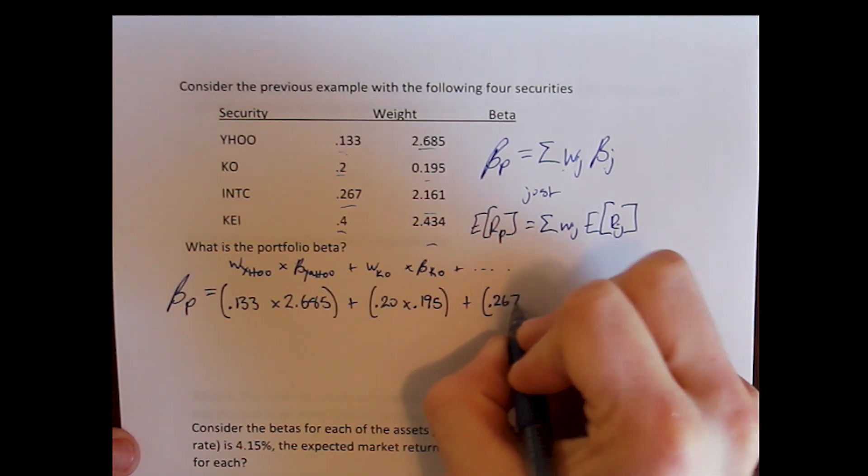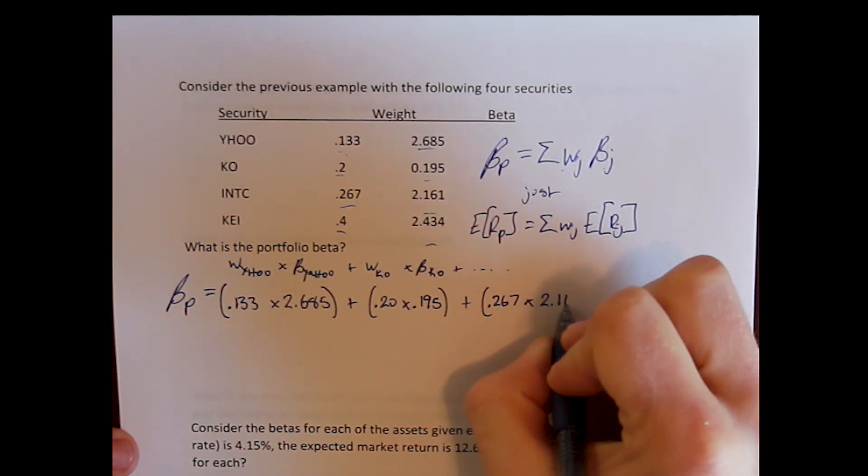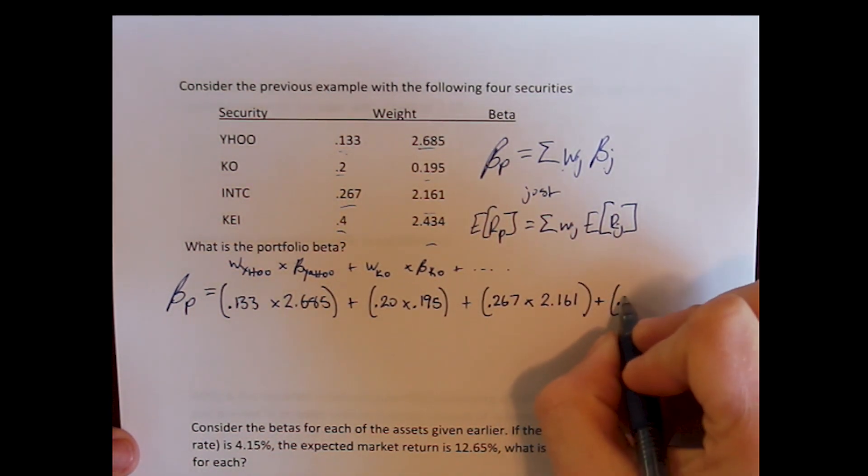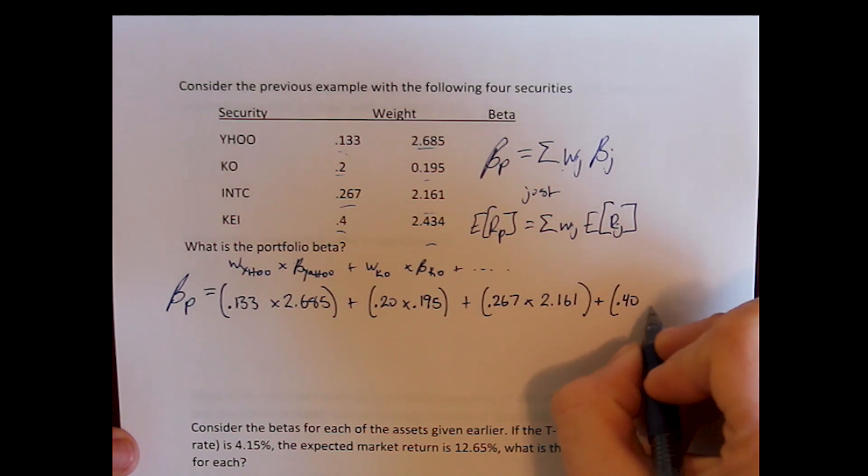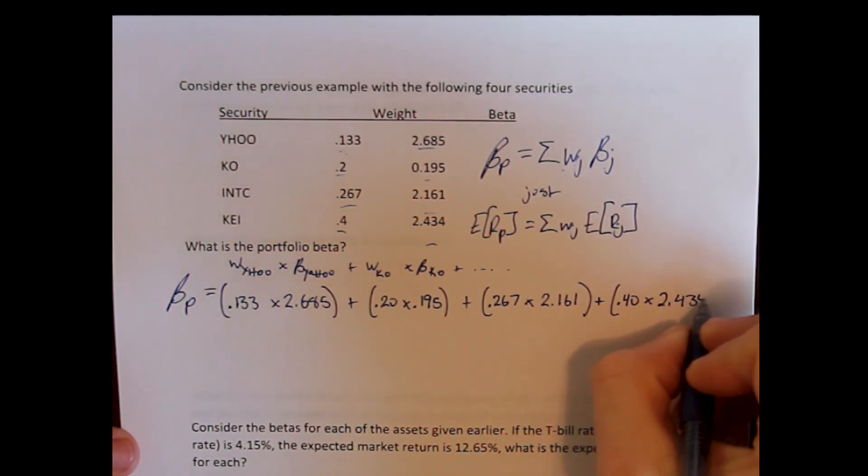26.7% of our portfolio is in Intel and the beta for Intel is 2.161 plus the remaining 40% of our portfolio is invested in Keithley, which has a beta of 2.434.